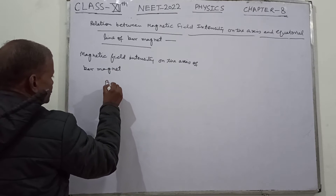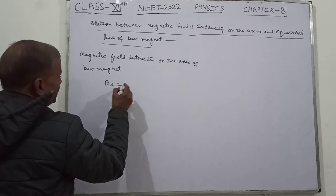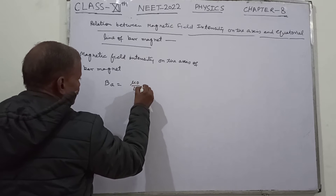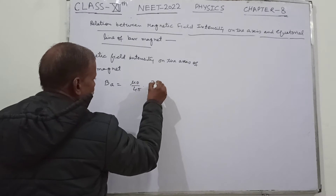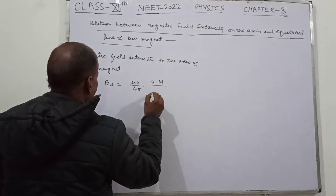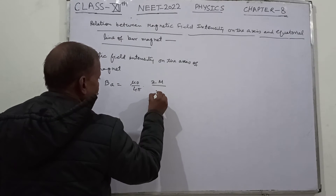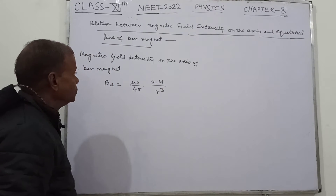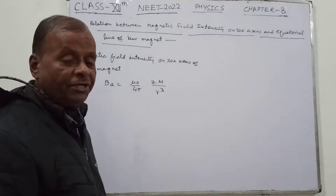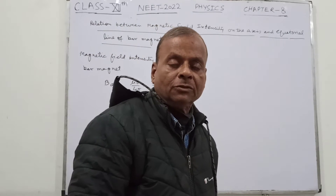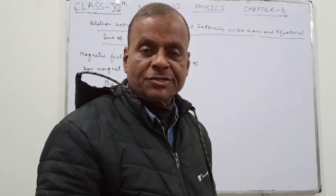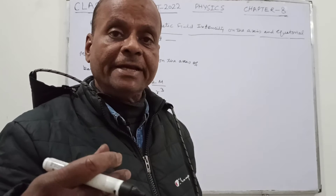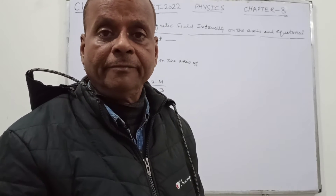This we know: Ba is equal to μ₀ upon 4π into 2M upon R³. We take the same magnet, and we find the magnetic field intensity on the axis and then on the equatorial line.